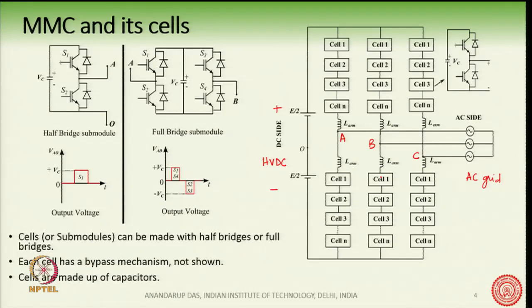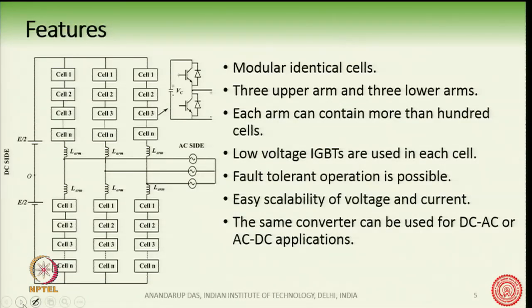The arm inductor has many functions: it can control the circulating current inside the arms and can also limit the short-circuit current in the event of a short circuit on the DC side. Each cell is a half-bridge — one of the simplest structures in power electronics — and each cell has a DC bus made up of a capacitor, so there is no need for any isolation.